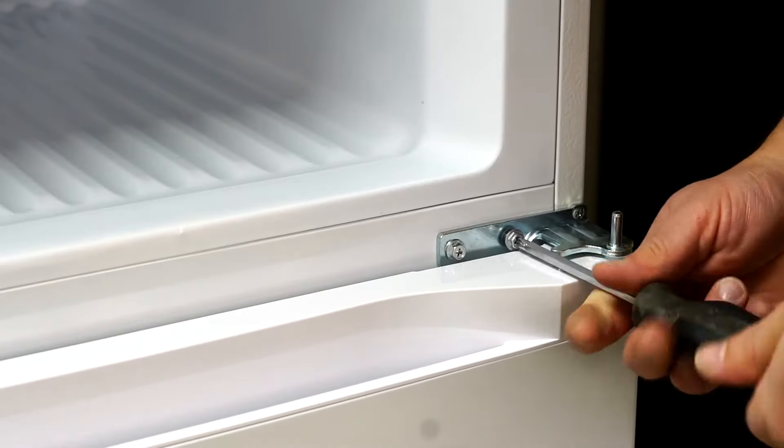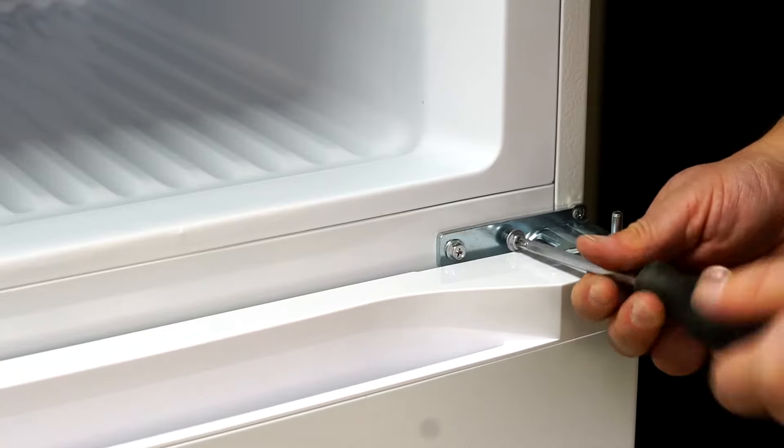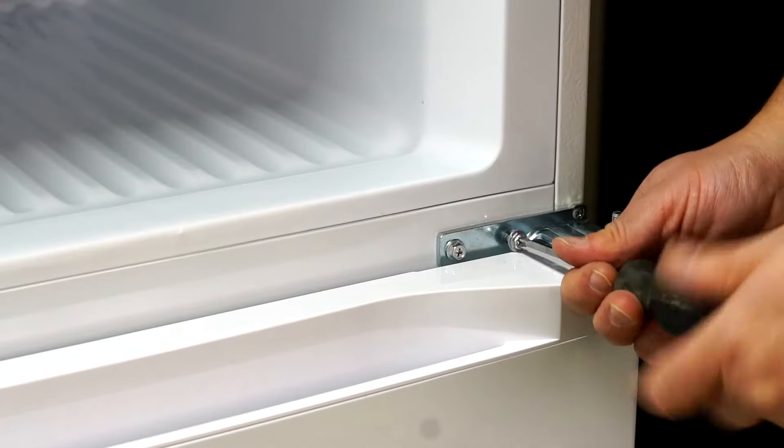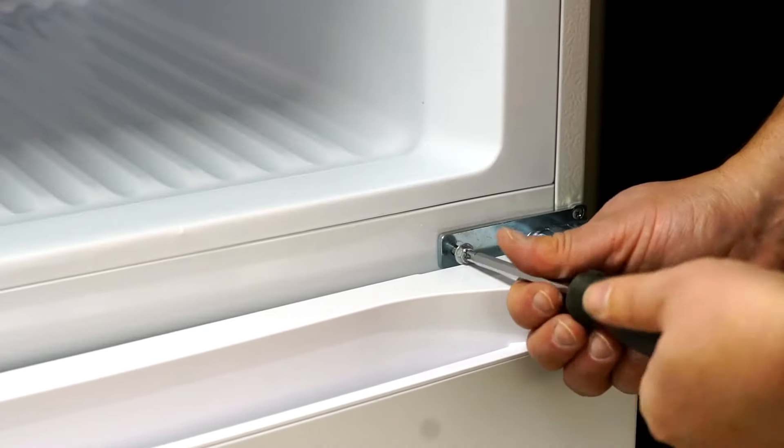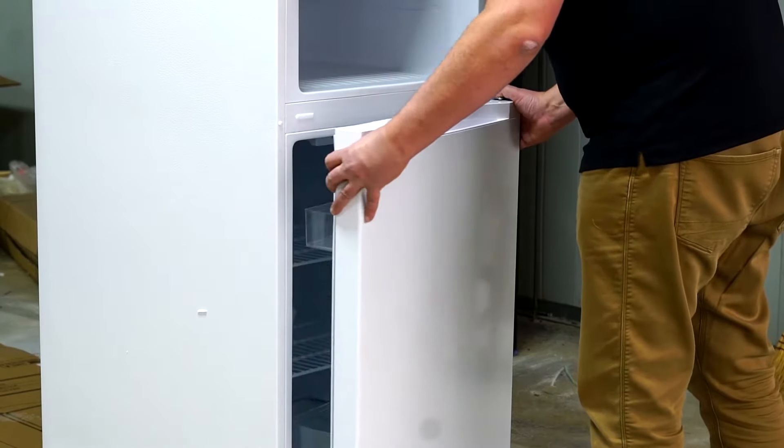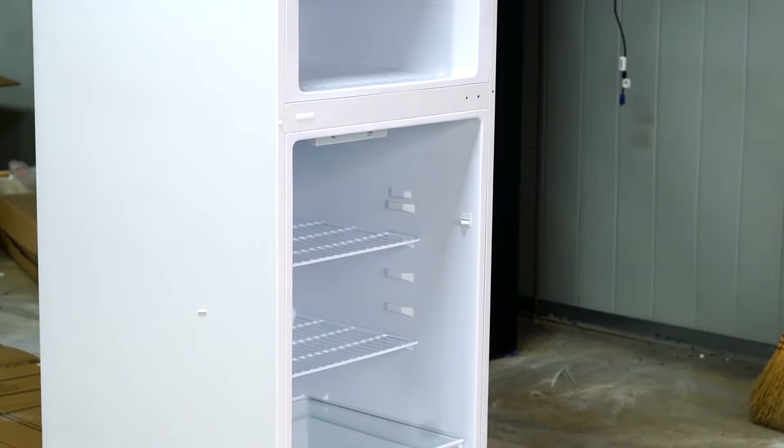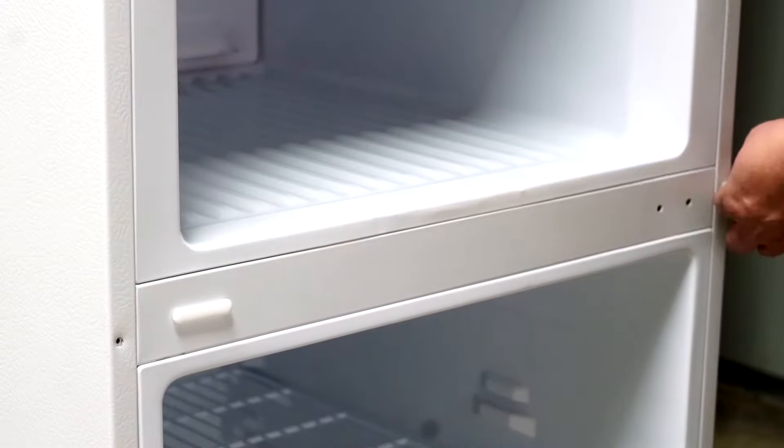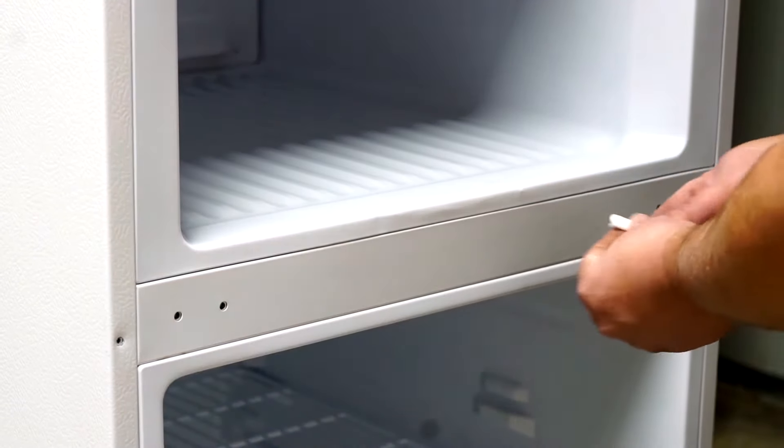Next we will remove the screws from the middle hinge. Now we can pivot the door away and lift it off. Our next step is to remove the screw cap and move it to the right side of the unit, as well as the hole plugs to the right side of the unit.